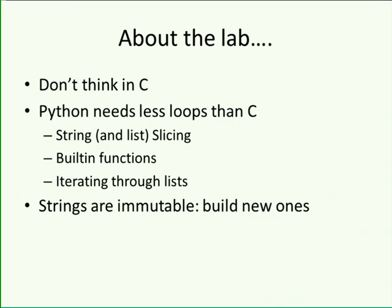There are some data types which are immutable: numbers and strings basically. Some data types that are mutable and can be changed are lists, sets, dictionaries, and tuples. You need to get used to those.